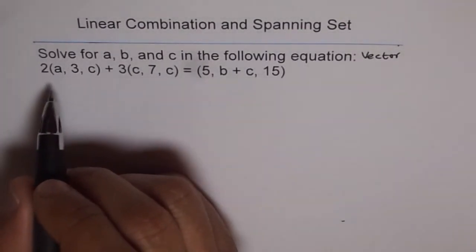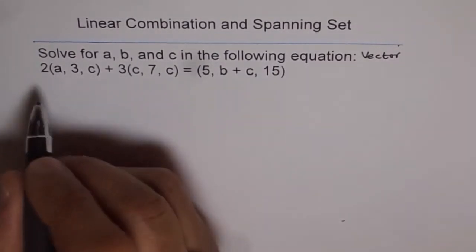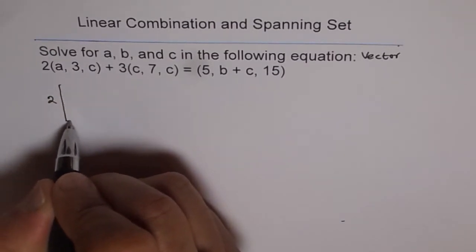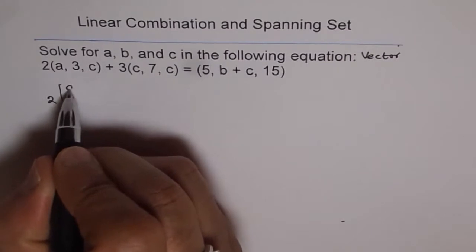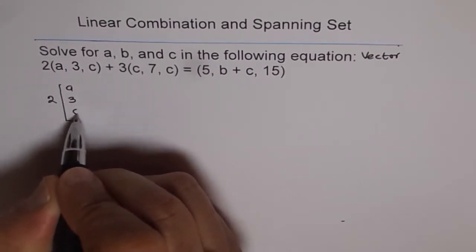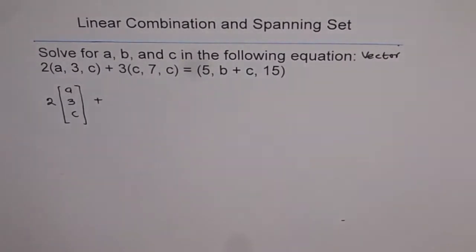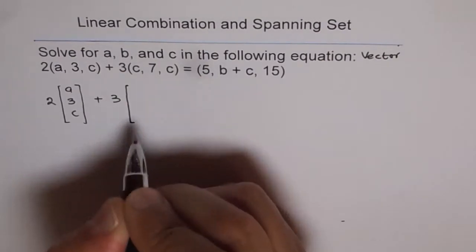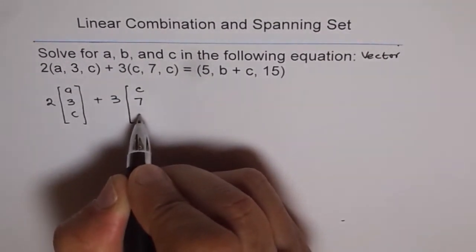So, this vector at present is written in the Cartesian form. We will write this as 2 times, and instead of writing in a row form, we will write in column matrix. That means it can be written as a3c. This is exactly the same vector. The only thing is that the notation is different.